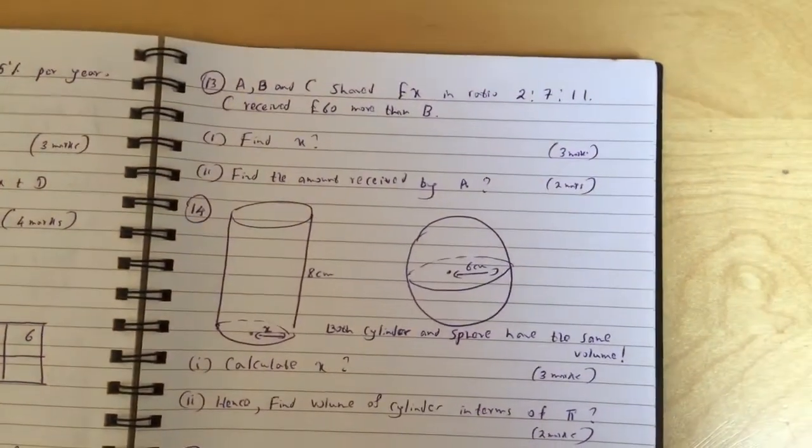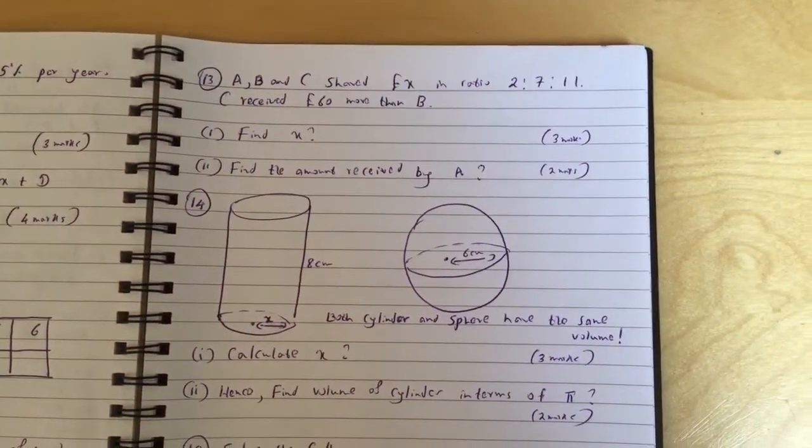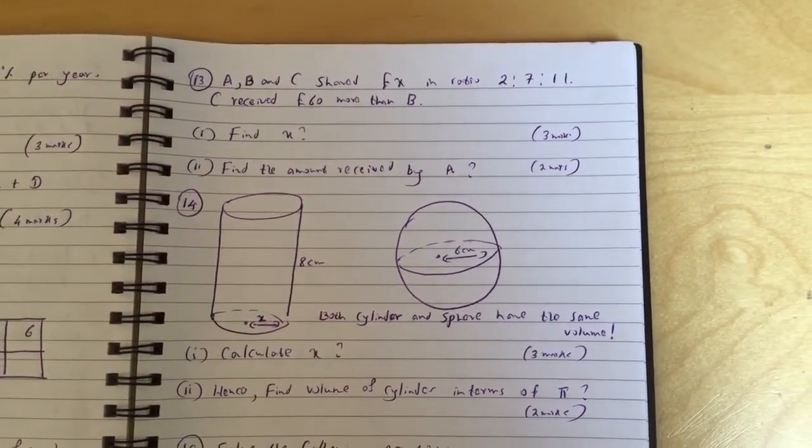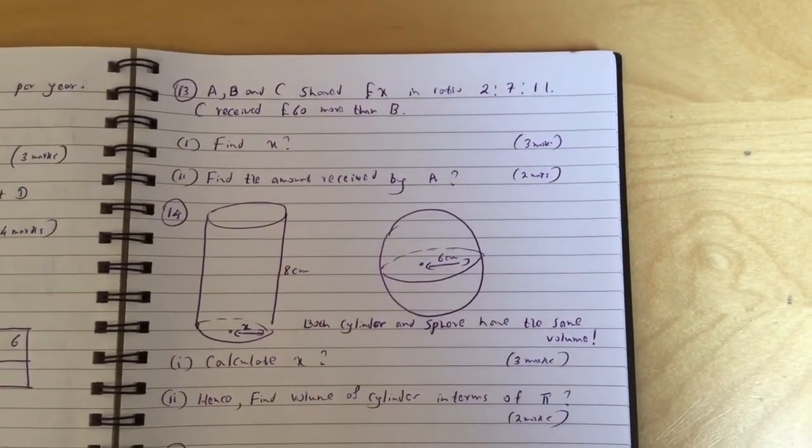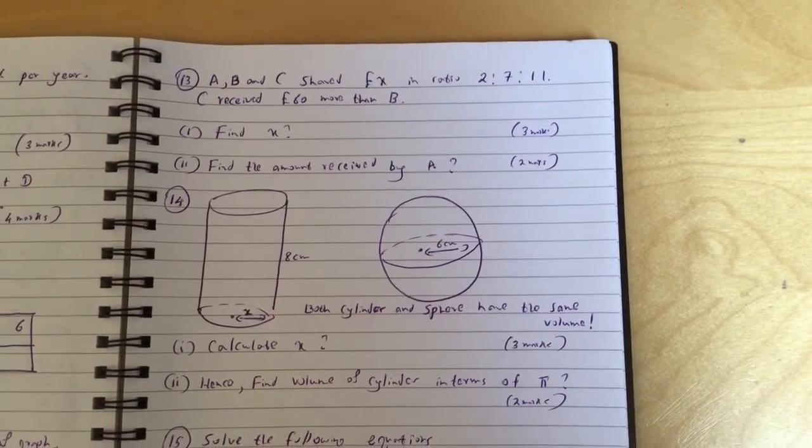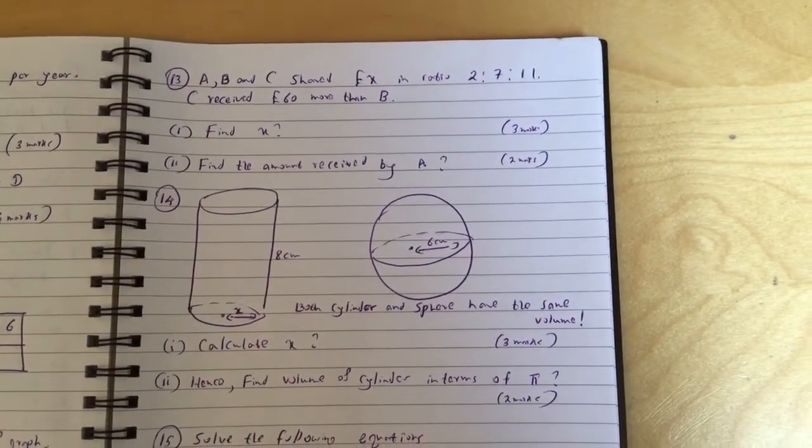Question 13: A, b, and c shared x pounds in ratio 2 to 7 to 11. C received 60 pounds more than b. Find x. Part 2: Find the amount received by a.